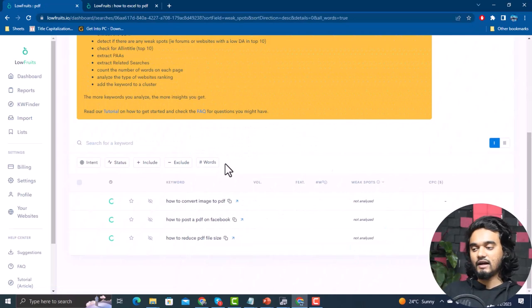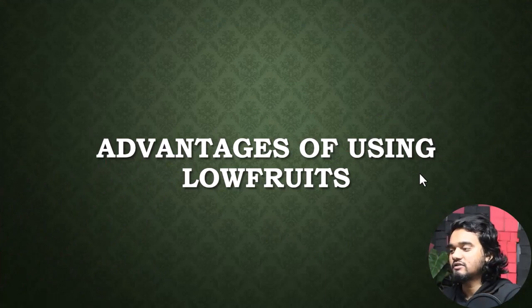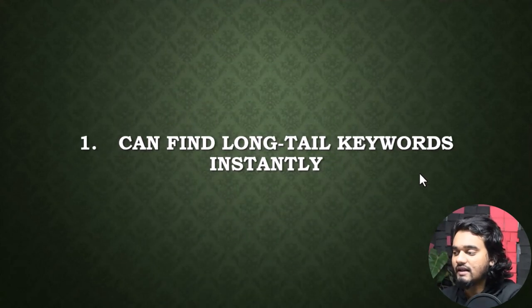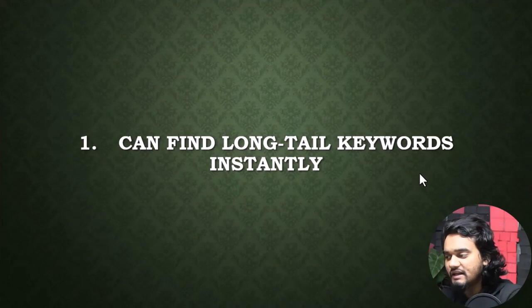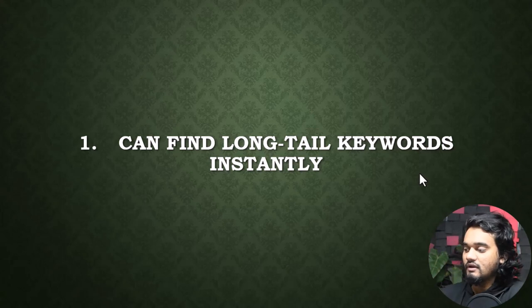Now let's talk about the pros and cons of LowFruits.io. Starting with advantages: Number one — it can find long-tail keywords instantly. You can easily find hundreds of long-tail keywords within seconds, and once the list is generated, you can download it as a spreadsheet to track them in the future. Number two — you can increase traffic massively.